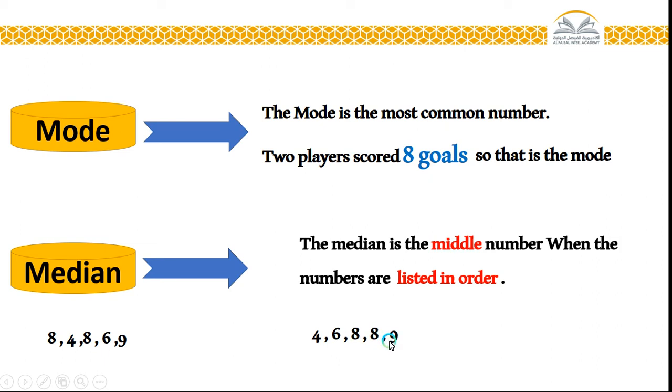Four, six, eight, eight, nine. After that, I will remove the first one and the last one. Like that, I will get a new list: six, eight, eight. I will repeat the same process again. Then I will remove the first one and the last one. Still, only one number. This is our median.